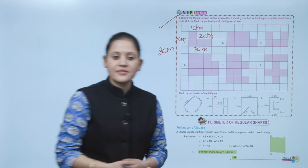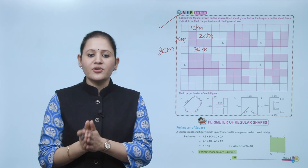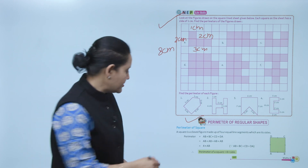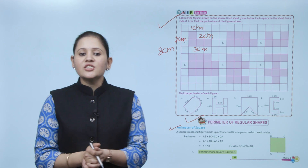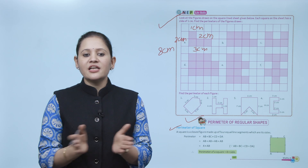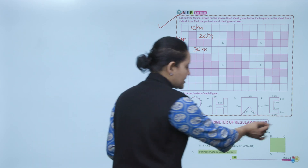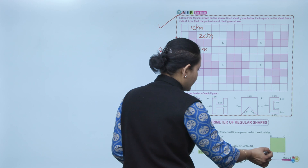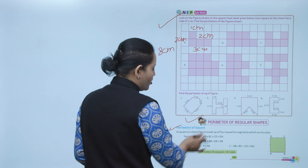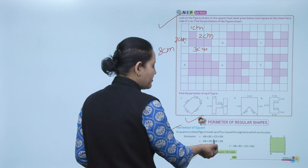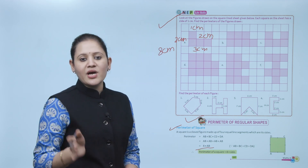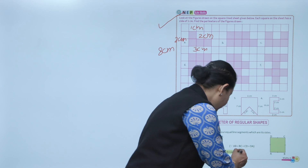Next is perimeter of rectangular shapes. A square is a closed figure made up of 4 equal line segments. The perimeter equals AB plus AB plus AB plus AB, which equals 4 into AB. So the perimeter of a square equals 4 into side.